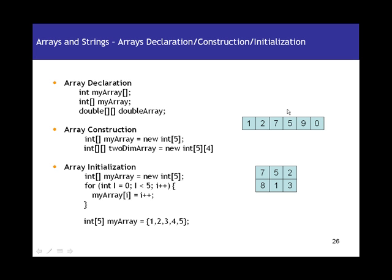Only one. For example, with an integer declaration like int i, you can only store one value at a time — int equal to 10 or int equal to 20. At no point can you store more than one value in any of these variables. If there is a scenario where you would like to store multiple values in the same variable at the same time, what do you do? The answer to that is Arrays.